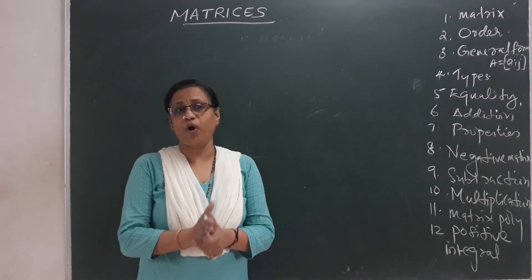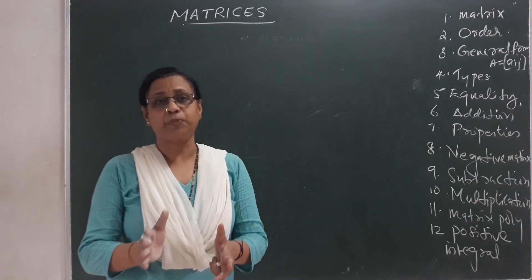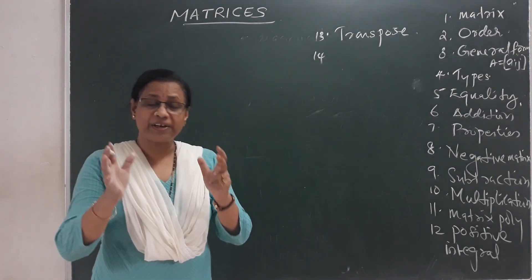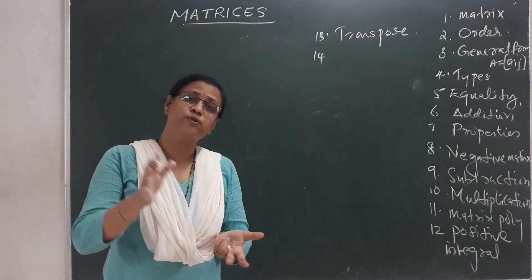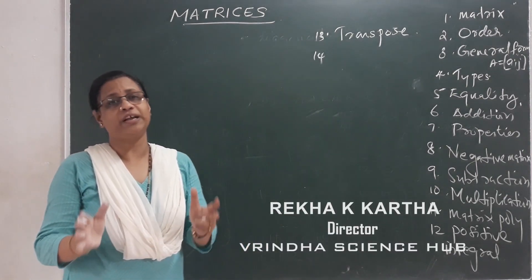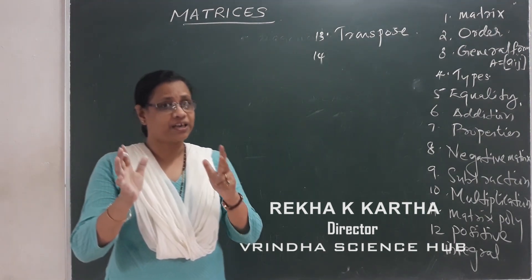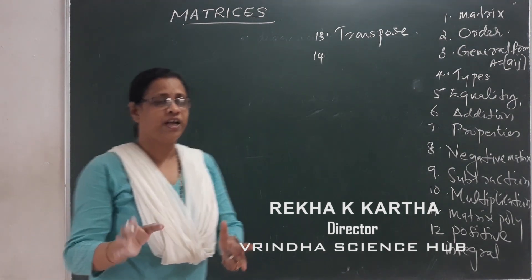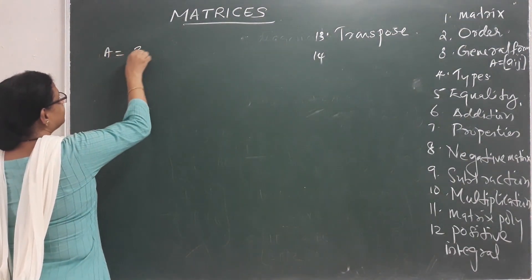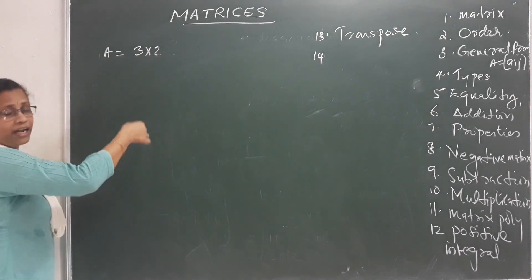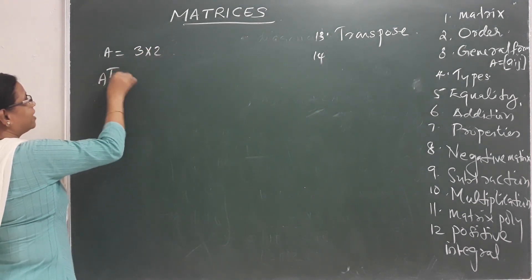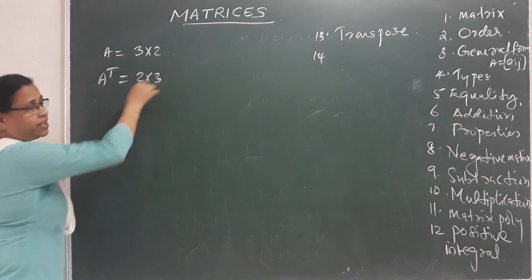Transpose of a Matrix. In this chapter, the next point is the Transpose of a Matrix. It is called the Transpose of a Matrix. In this example, what does this matrix mean? It is called the 3 by 2 matrix. It is called the Transpose of a Transpose. That is equal to 2 by 3.